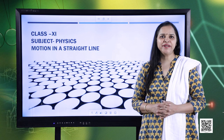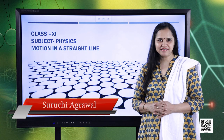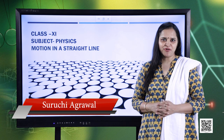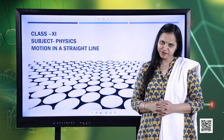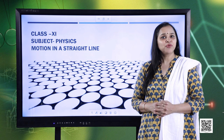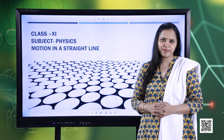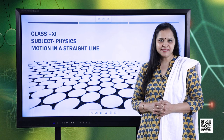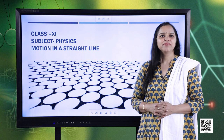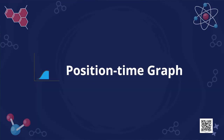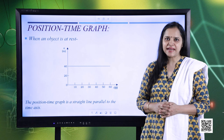Hello learners. In the previous session we started our discussion for motion in a straight line with the concept of point object, reference frame, position of an object. We talked about distance and displacement. Now let us continue the discussion by expressing the position-time graph. By plotting the position-time graph, we are going to discuss the motion that you have already studied in the 9th standard.